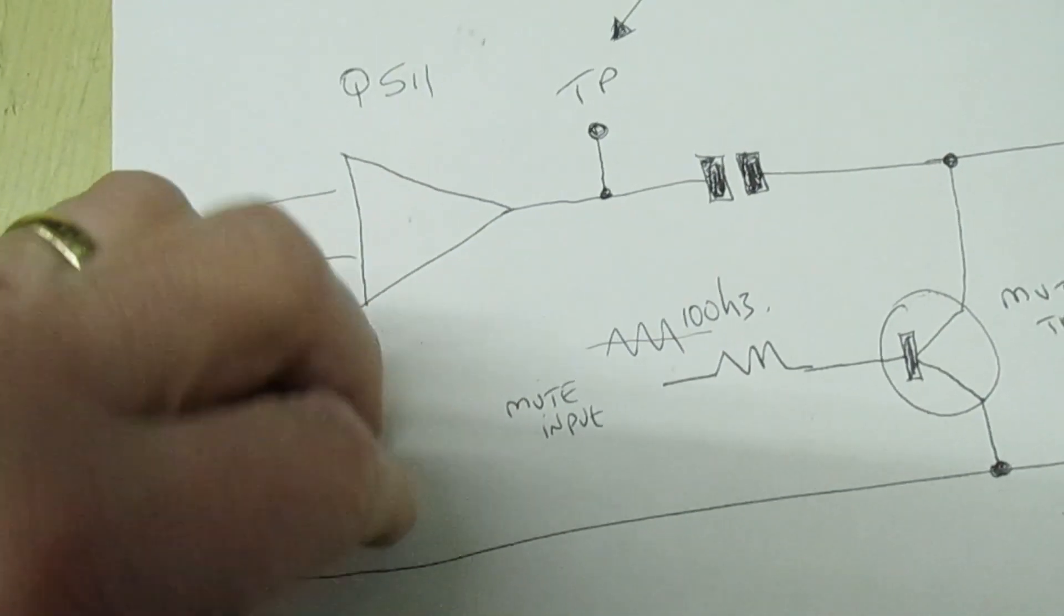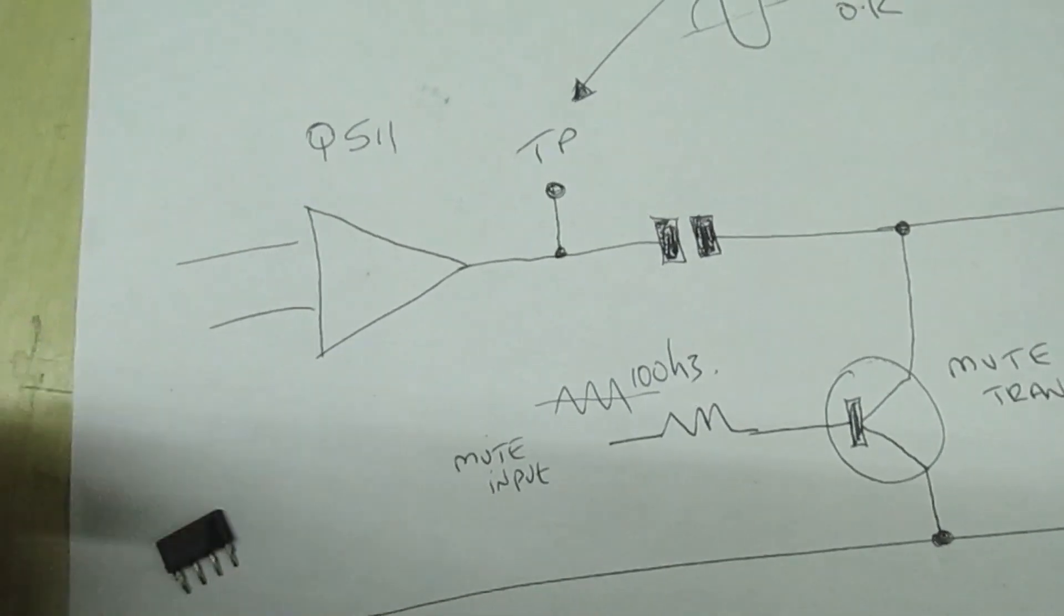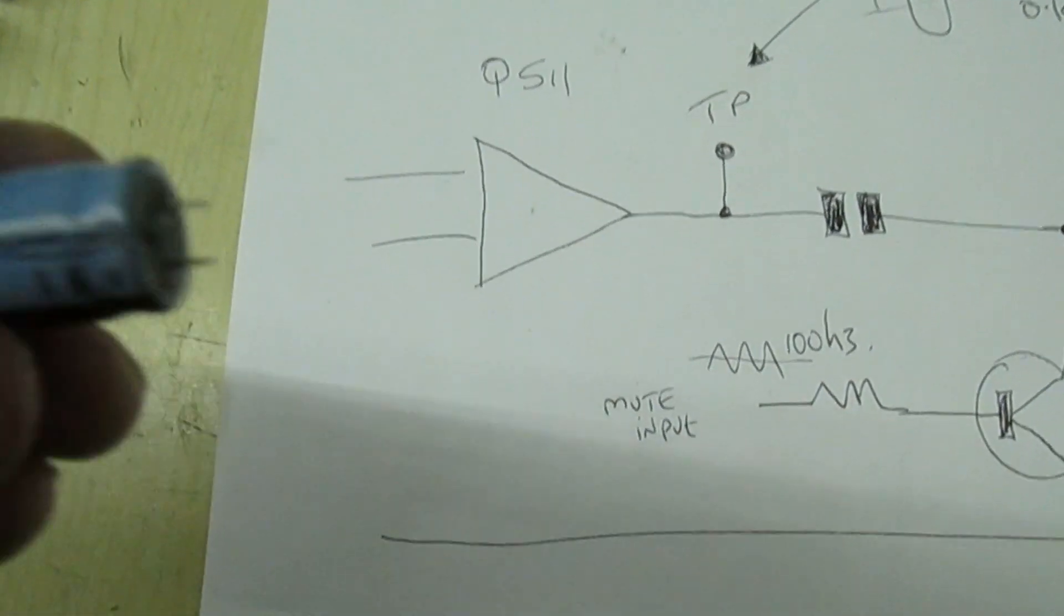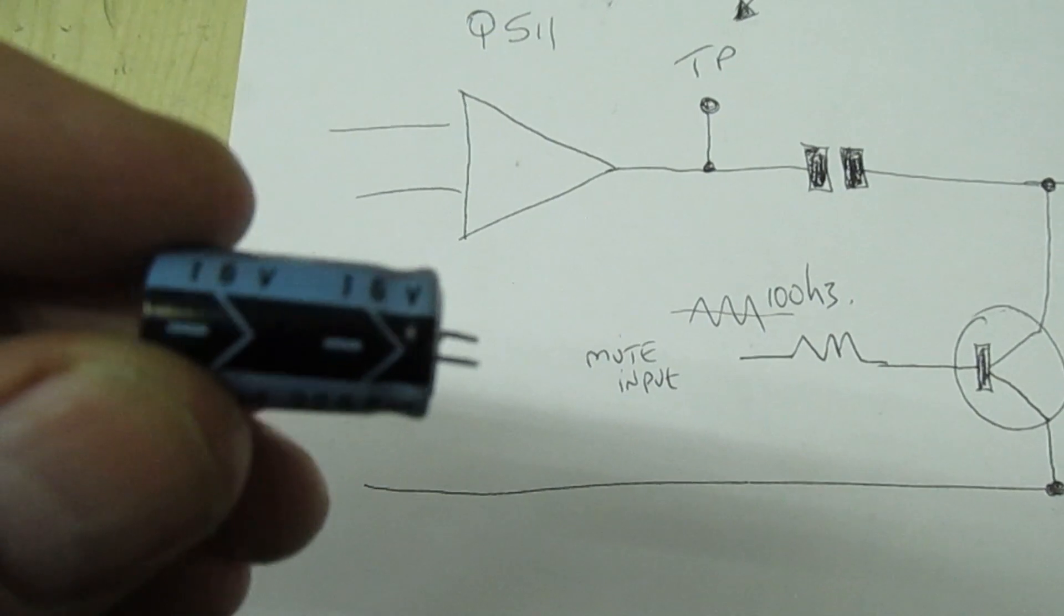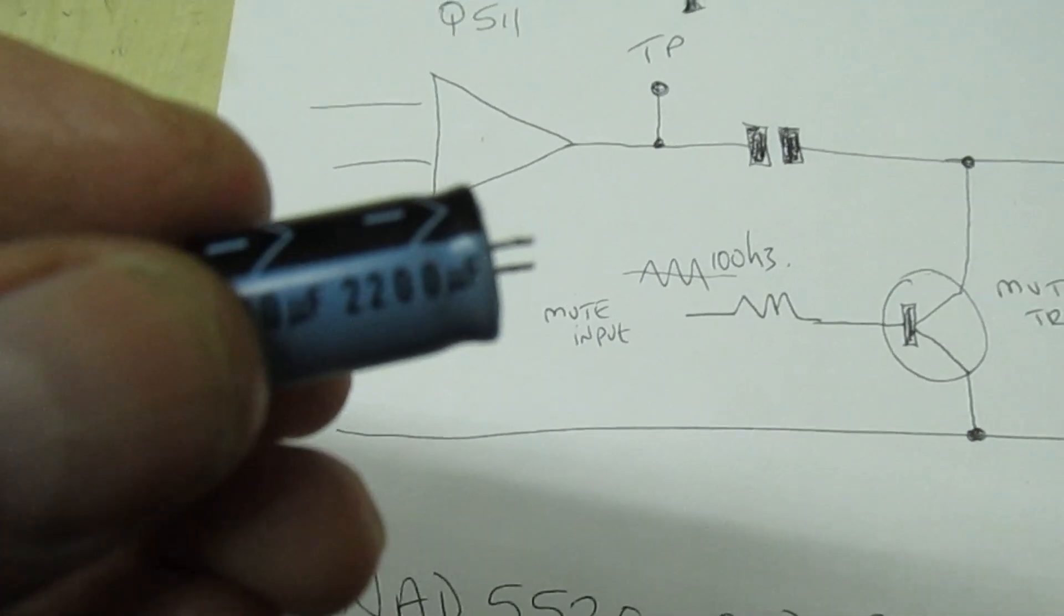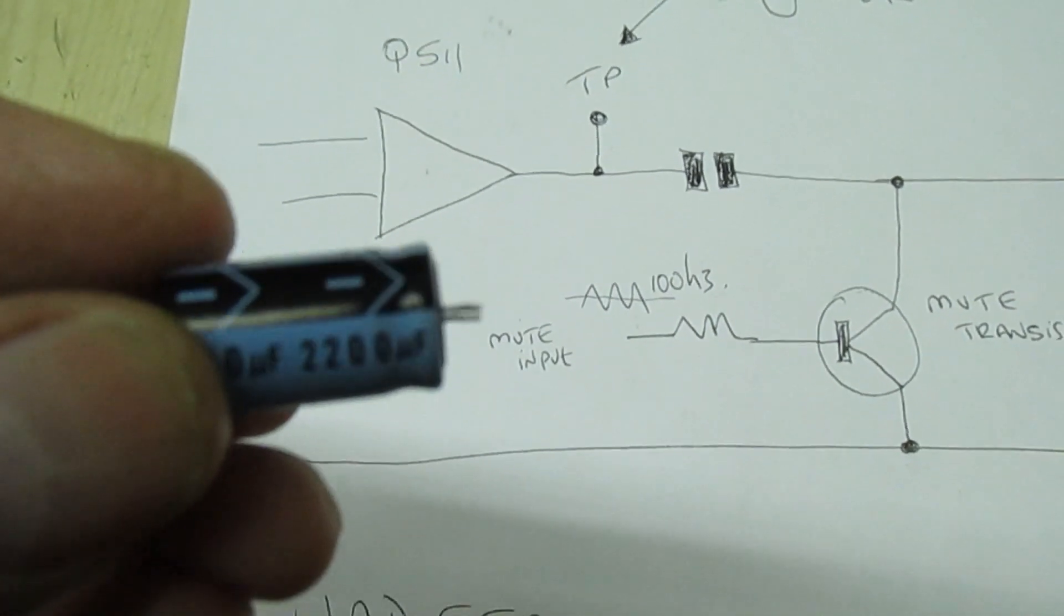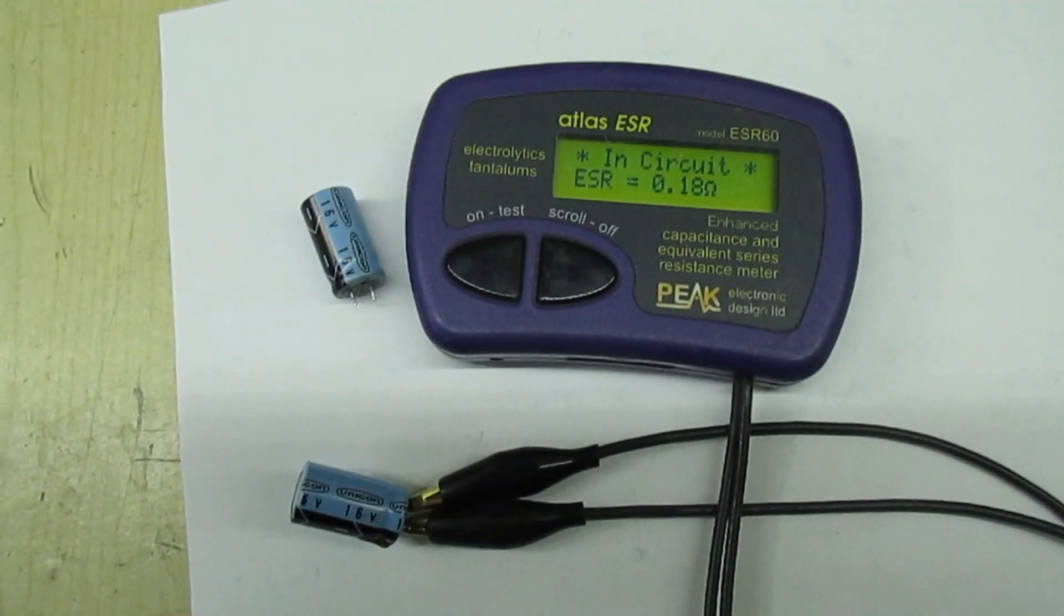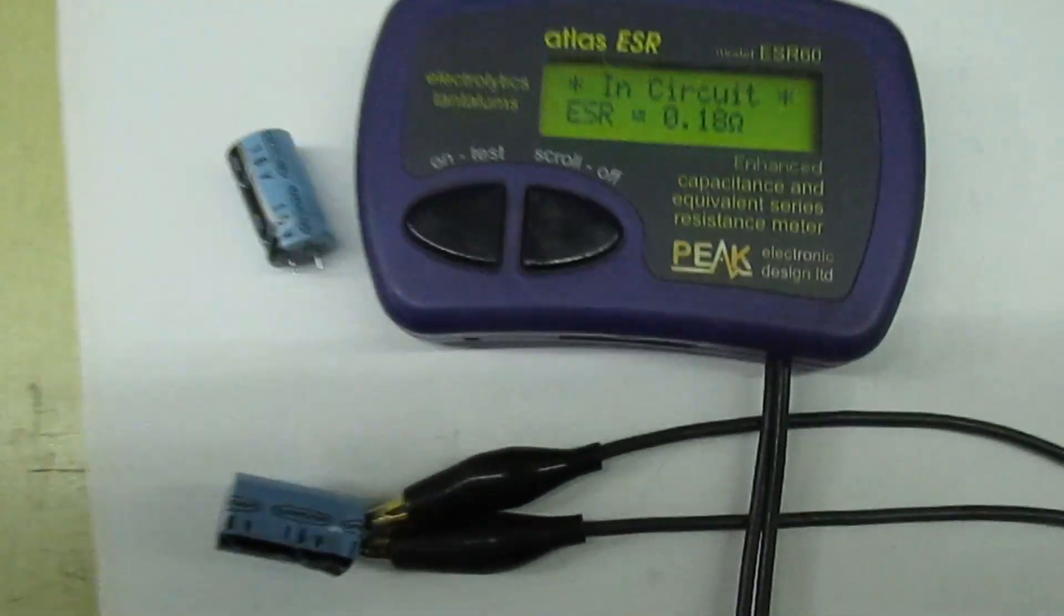I've checked the three reservoir capacitors and although they did seem to have a relatively high effective series resistance, they give a very strange effect on my meter. So if you look at this, it actually says 0.18 ohms, which is very high for a 2200 microfarad cap, but it actually says 'in circuit'.